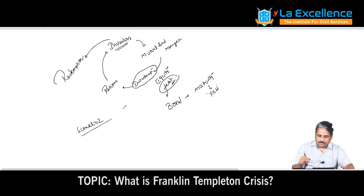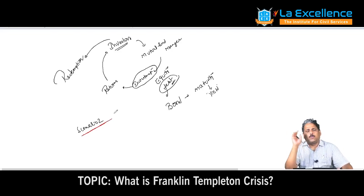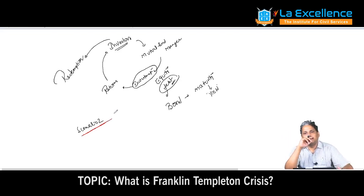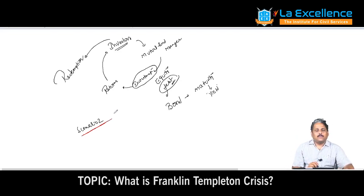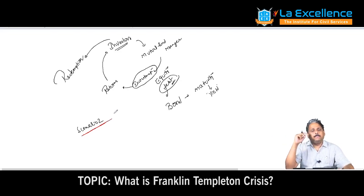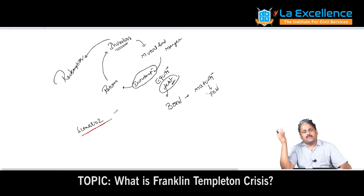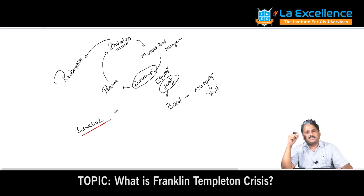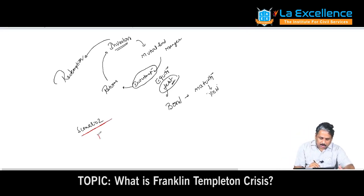In Scenario 2 — ICICI Bank has faced this situation: all depositors at a single go want their money back due to a rumor that the bank is about to close. All depositors panic and want to withdraw. Can a bank pay all that money at once? The bank may have given it as loans for five or ten years, and cannot demand it back immediately. When all depositors want their money back at a single go, that situation is called a bank run.